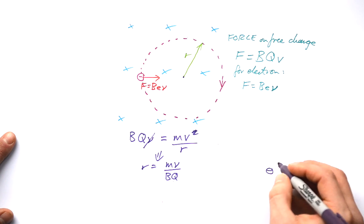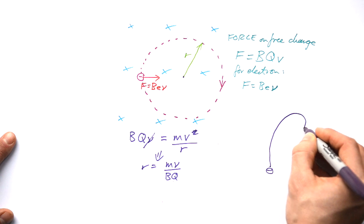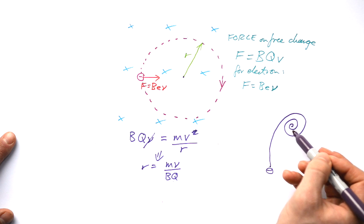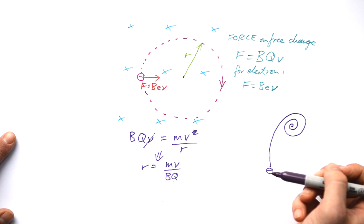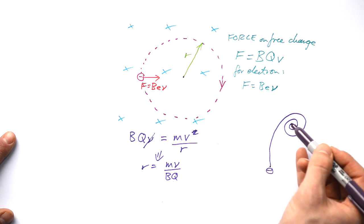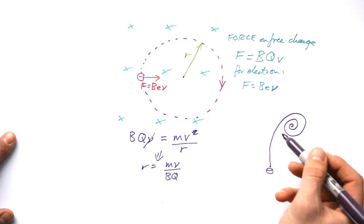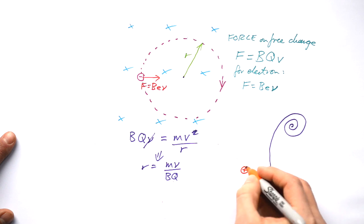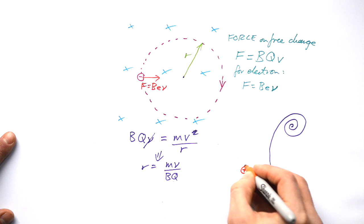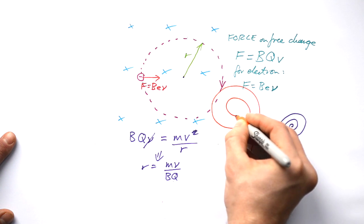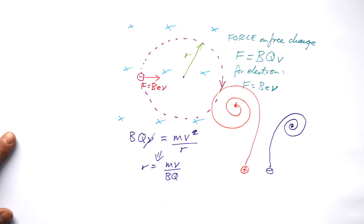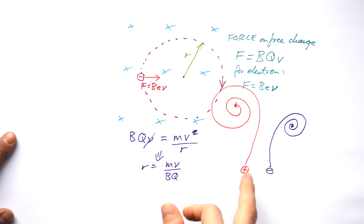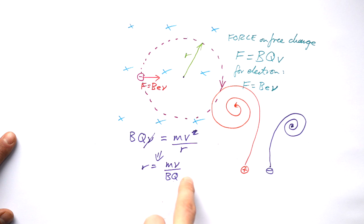In a cloud chamber, an electron goes in a circle but spirals inward very tightly, because it loses energy as it knocks into particles in the cloud chamber — losing kinetic energy, and therefore its radius decreases. The radius of that spiral is very small to begin with. If we have an ion instead, which is heavy, because it has a bigger mass its radius is going to be bigger — so it ends up going in a much larger curve. That's how you can deduce what kind of particles are going through a cloud chamber. A big radius means the particle is heavy, or moving fast.